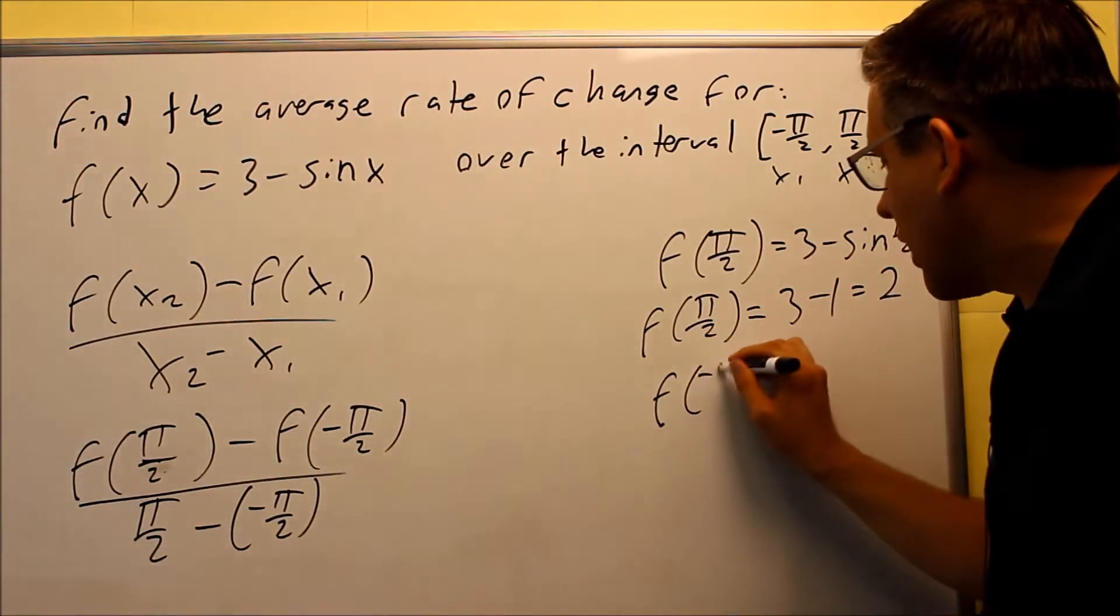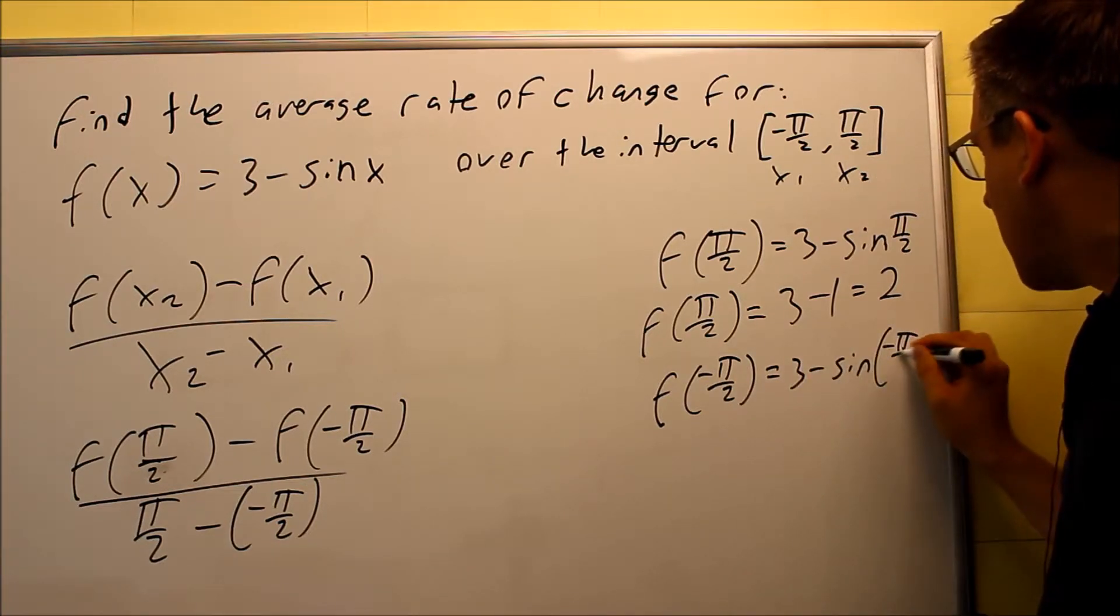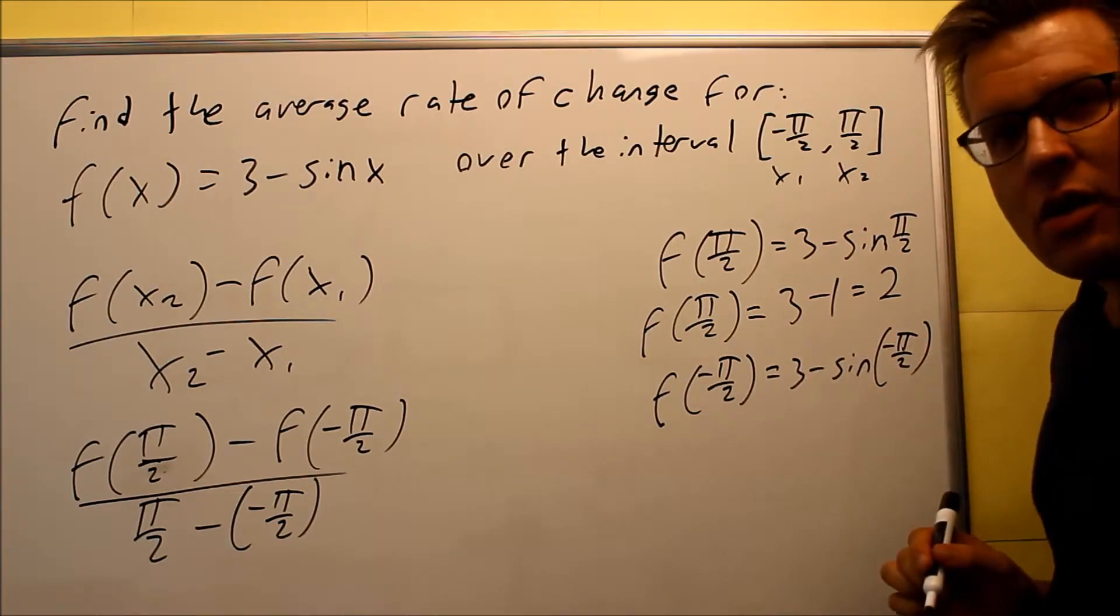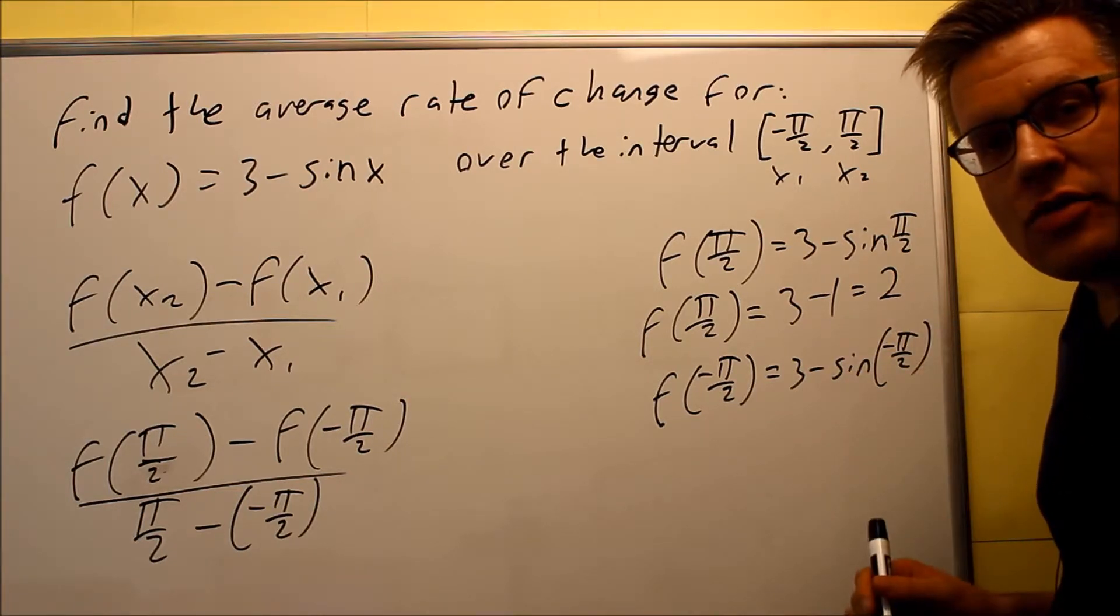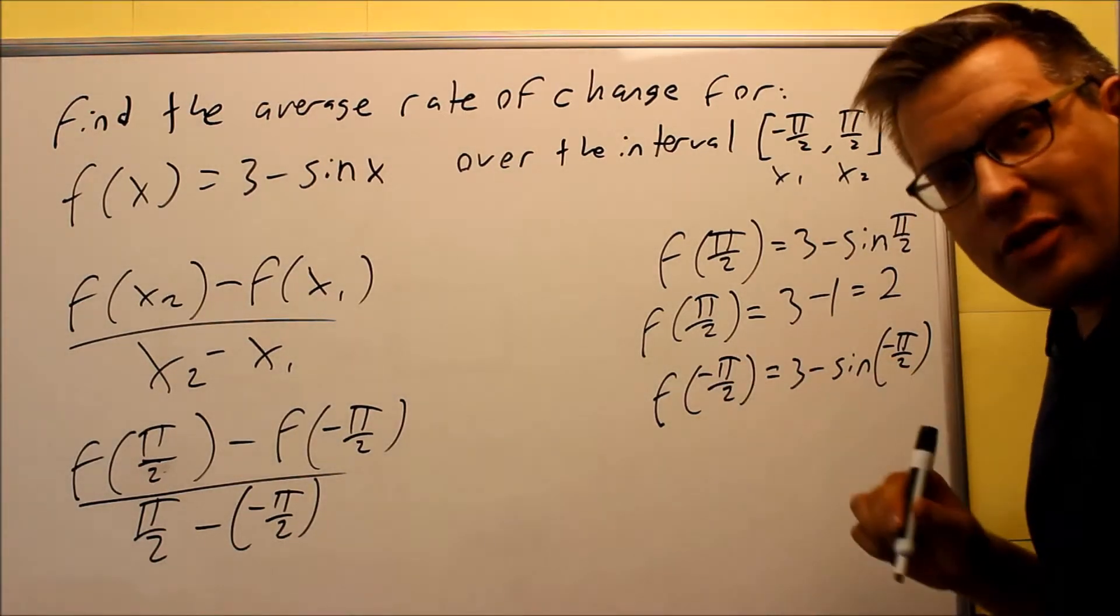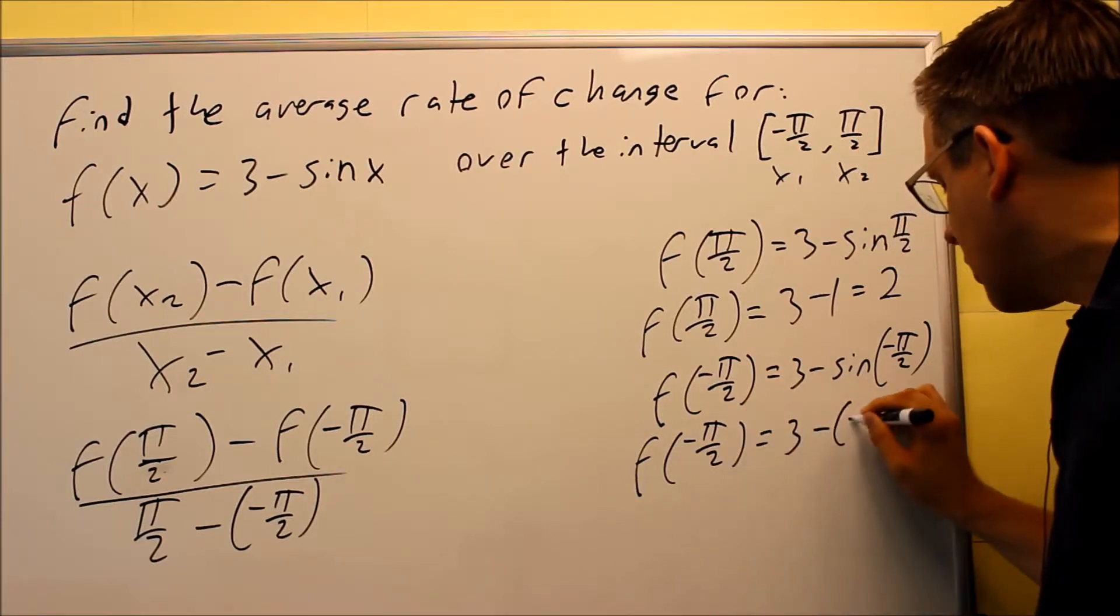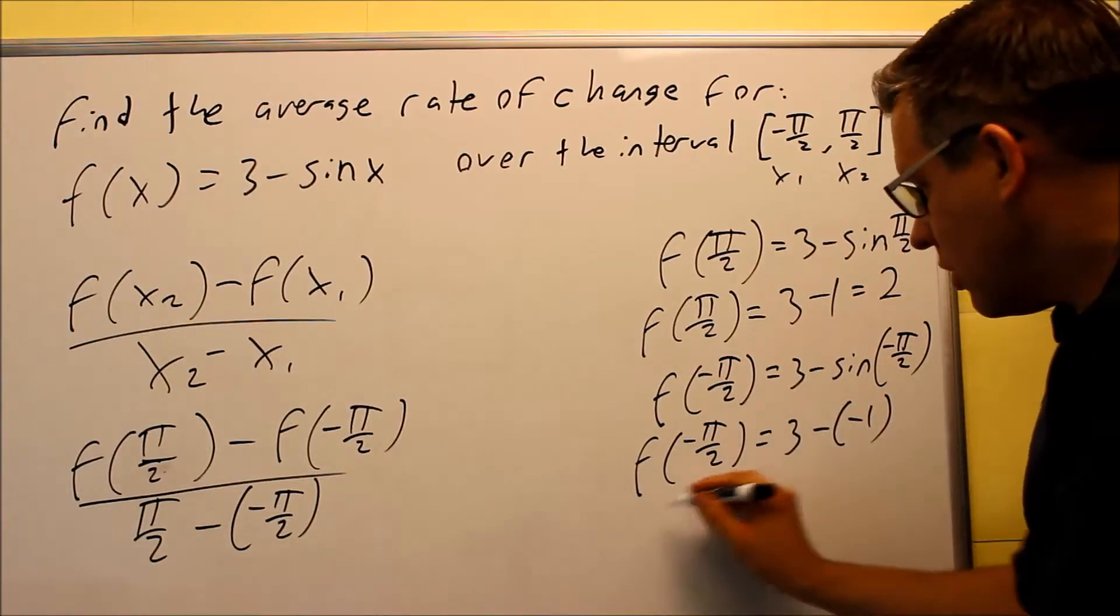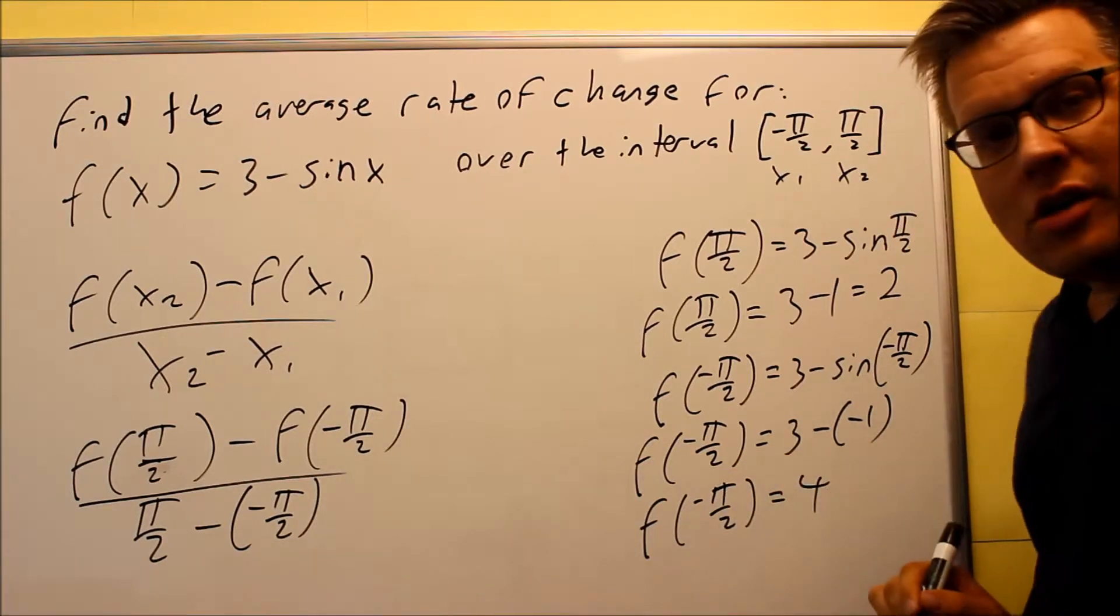Next, f of negative pi over 2 is 3 minus sine negative pi over 2. This right here, negative pi over 2, is the same thing as 270 degrees or 3 pi over 2. The y value down there is negative 1. So I have f of negative pi over 2 equals 3 minus negative 1. f of negative pi over 2 is equal to 4.